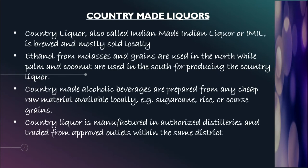Now let's talk about country made liquor. Country made liquors are those liquors that are made in our country. This is also called Indian Made Indian Liquor or IMIL, and it is brewed and sold mostly locally. It is very common in northern and southern parts of India. Ethanol from molasses and grains is used in the northern part of India, whereas palm and coconut is used for extracting alcoholic beverages in the southern parts. Country made alcoholic beverages are prepared from any cheap raw material available, like sugarcane, rice, and grains.